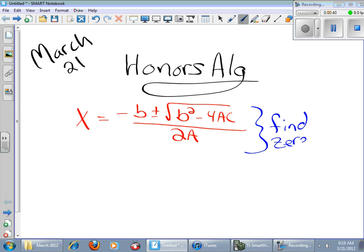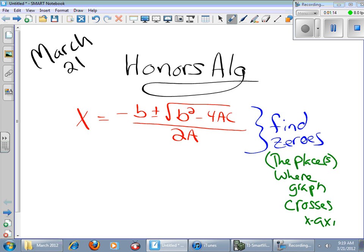What are the zeros? In the sense of a quadratic equation, they are the places where the graph crosses the x-axis. The zeros are the places where the graph crosses the x-axis.